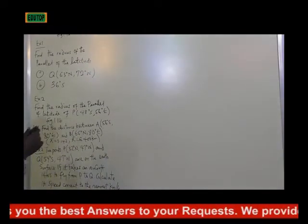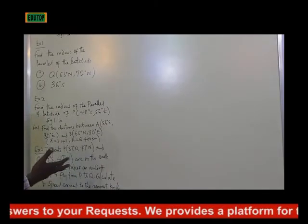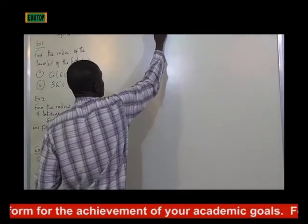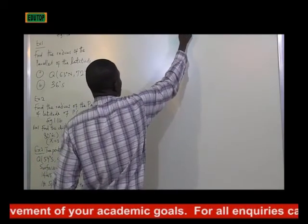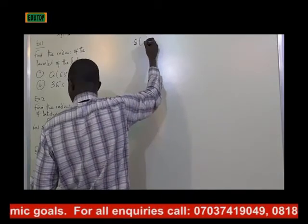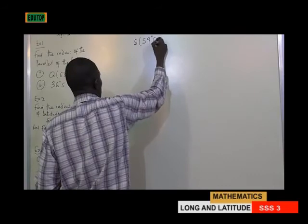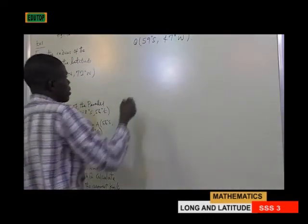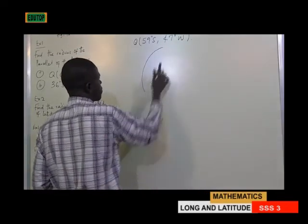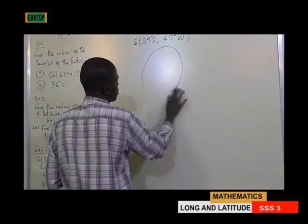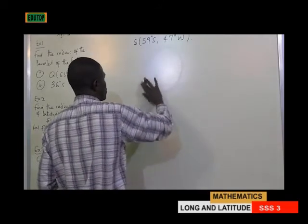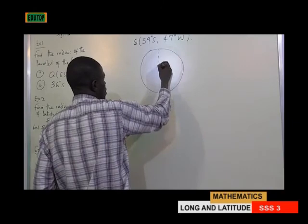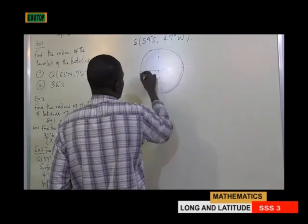Whenever a question is given on longitude and latitude, the first thing you must do is draw the diagram. We draw the diagram showing our Greenwich meridian and our equator, and locate the two points P and Q which share the same longitude of 47 degrees west.